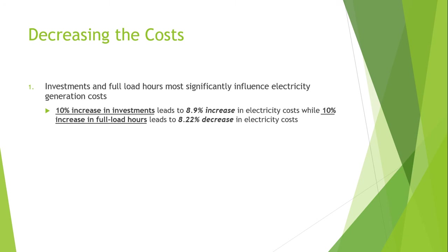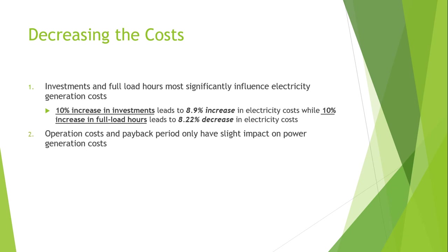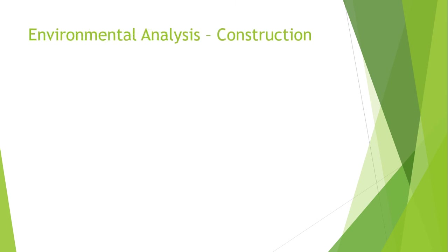So, how to decrease the cost? Investment and full load hours are the most significant factors influencing the electricity generation cost. A 10% increase in investment leads to an 8.9% increase in electricity cost, while a 10% increase in full load hours leads to an 8.2% decrease. Operation cost and the payback period have only a slight impact on power generation cost, and interest rates moderately affect the cost of electricity.